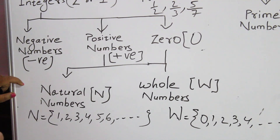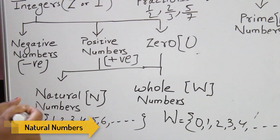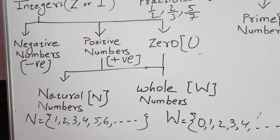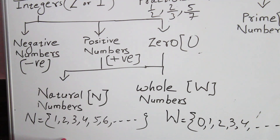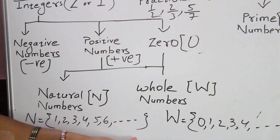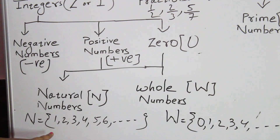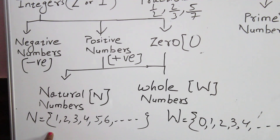Natural numbers — the set of natural numbers is denoted by capital N. Natural numbers start from 1: 1, 2, 3, 4, 5, and so on. So the smallest natural number is 1.